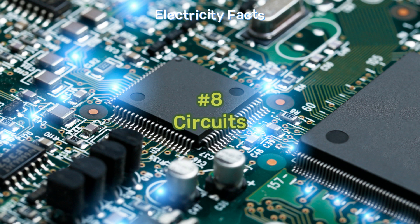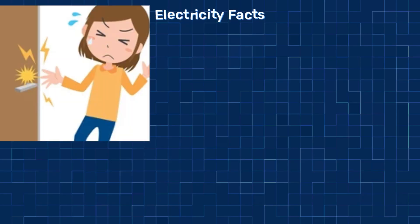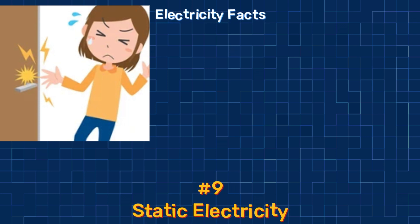Ever experienced a sudden zap when touching certain objects? This jolting phenomenon known as static electricity occurs when electrons leap from one object to another. It's quite an electrifying event.